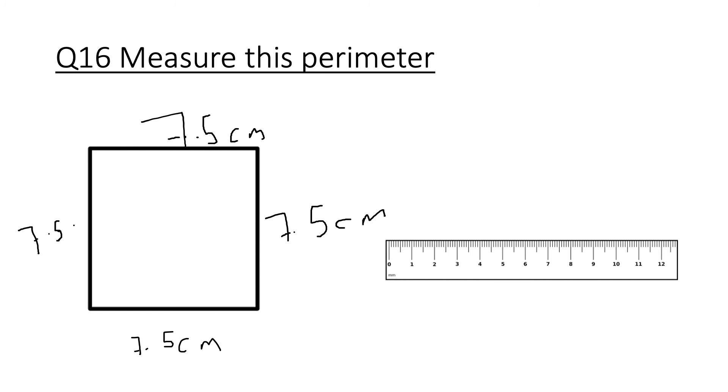When I do 7.5 multiplied by 4, because the perimeter is adding the side lengths up together, the perimeter is the distance around the shape, I'm going to get 30 centimeters. Using your ruler, make sure to measure just one side because the property of a square is that each of the lengths are the same length.